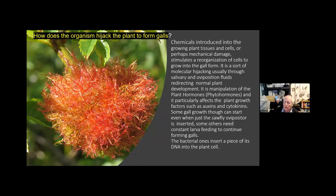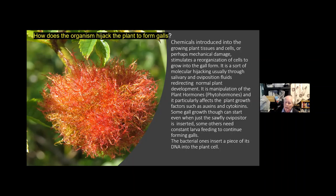How does it actually do this? Basically it's a chemical reaction — chemicals are introduced into the plant tissues and cells, and perhaps with some mechanical damage as well, it stimulates the reorganization of the cells, which then grows into the gall form rather than the normal form for that plant. It's a hijacking of the molecular structure, principally through the salivary glands of the insect feeding on it, or even when the insect lays eggs into the plant — that can start the process even before the animal is inside.